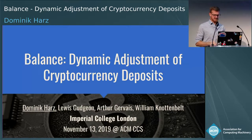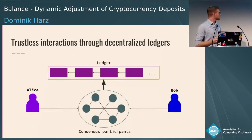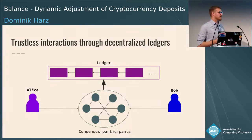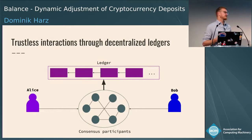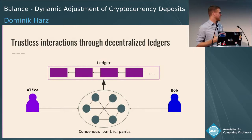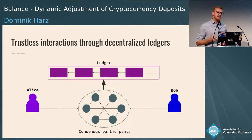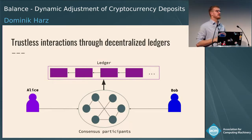Blockchains are a really great thing because we have Alice and Bob, and with the introduction of blockchains and decentralized ledgers, neither Alice nor Bob need to trust each other to make payments or have more complex interactions. We can have contracts enforced by consensus participants. However, this comes at a certain cost, and there's a lot of research on how to make this more scalable and cheaper.